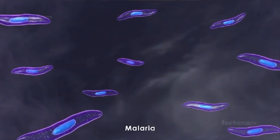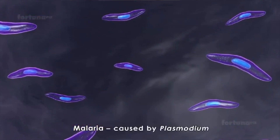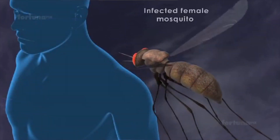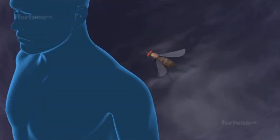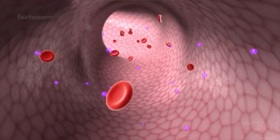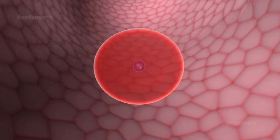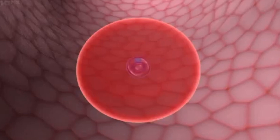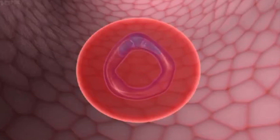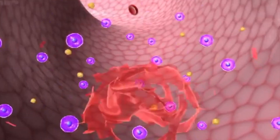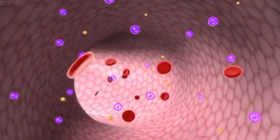Malaria is caused by unicellular parasites of the Plasmodium genus that are transmitted from person to person through the bite of a female Anopheles mosquito. Once injected into the bloodstream, the parasite first travels to the liver, and after some time, the parasites infect and replicate in red blood cells, which eventually explode and release yet more parasites into the bloodstream. This stage manifests with bouts of high fever and chills, coinciding with batches of the parasite bursting out of the red blood cells, and can also cause anemia due to the destruction of red blood cells.